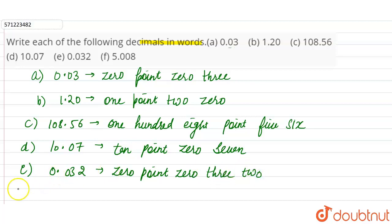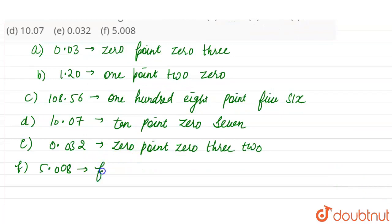Now F part and the last part is 5.008. So let's write five, then decimal point, write zero zero eight.